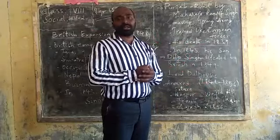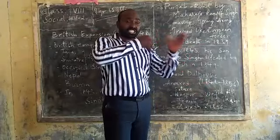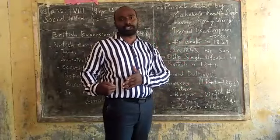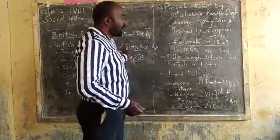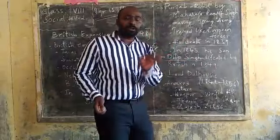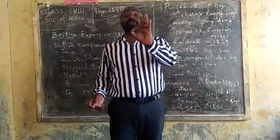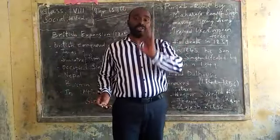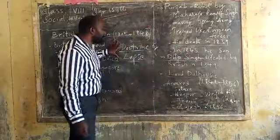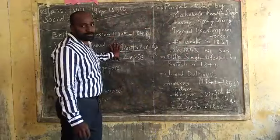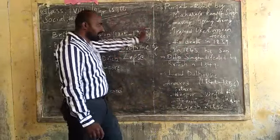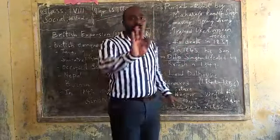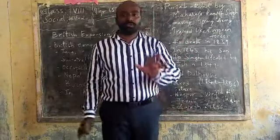Tomorrow we are going to learn about the administrative structure of the British. Children, today go through this topic. Explain briefly how the British people tried to occupy India. You are going to learn about the Doctrine of Lapse. Go through the completed topic. Take care of your health. Thank you.